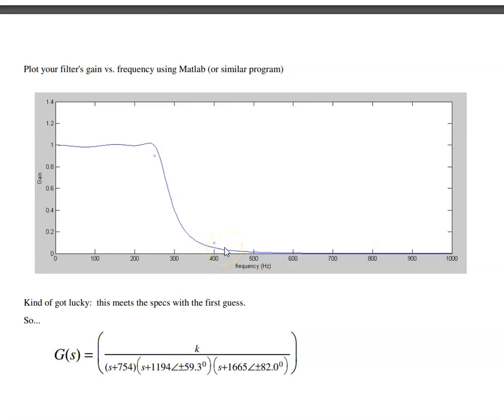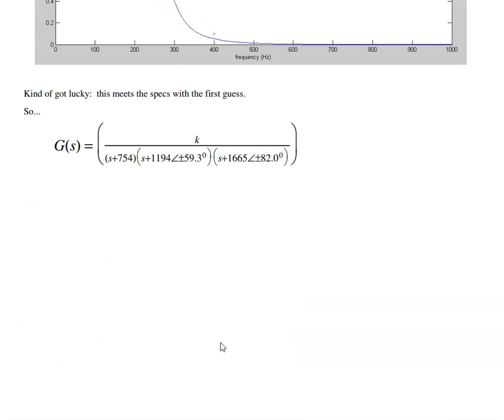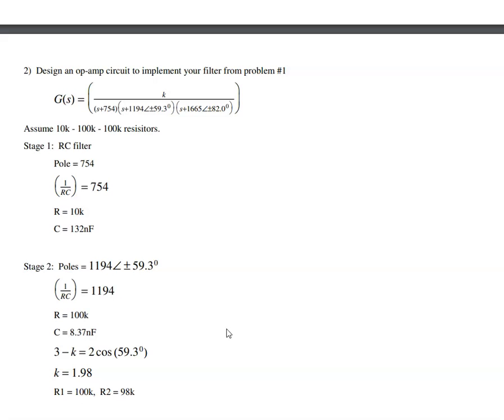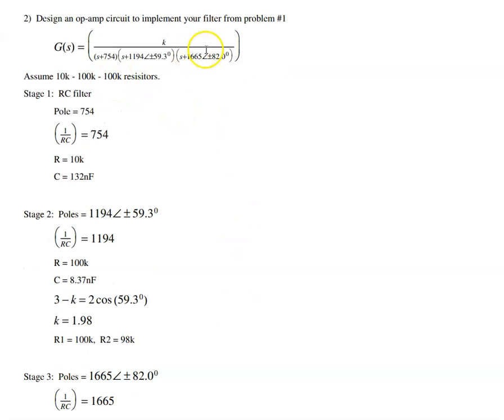So I kind of got lucky there with my first guess. Here's my filter. And K is just the product of all the poles to make the DC gain 1. The next problem is to design an op-amp circuit to implement that filter. Here I've got five poles, so I'll separate it into three separate filters. The first one is just an RC filter with a pole at 754 radians per second. The second is a second-order low-pass filter with a pole at 1194 at 59 degrees. The third stage is a second-order low-pass filter with a pole at 1665 at 82 degrees.